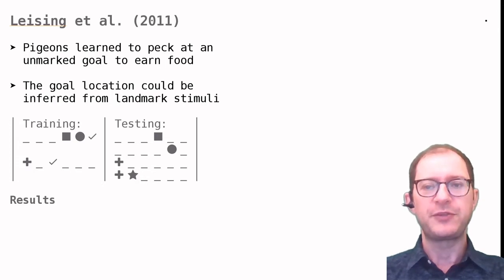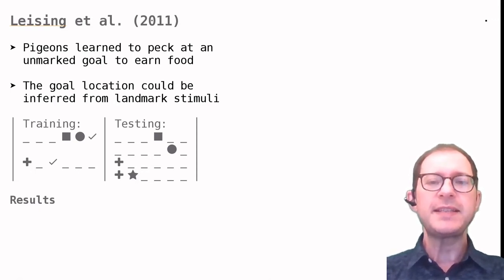During training, there were two conditions. One condition showed two stimuli, here shown as a square and a circle. In this case, the pigeon had to peck the location immediately to the right of the circle, marked here with a check mark. The other condition showed a third stimulus, here shown as a cross. In this case, the correct location was two steps to the right.